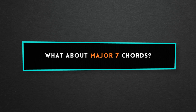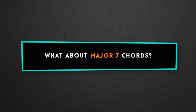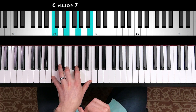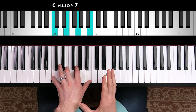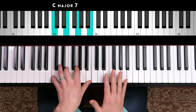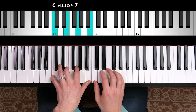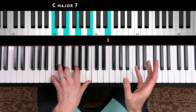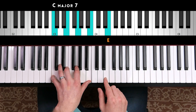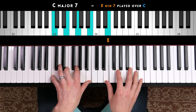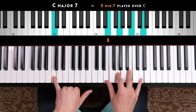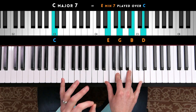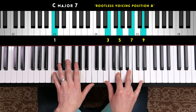Now how about a major 7 chord? Let me demonstrate from C. If we had a C major 7 chord, again we could use a rootless chord voicing. For a major 7 chord, we're going to find the chord's third — a major 3rd this time — which is going to be E. And this time we're going to build a minor 7 chord from E. So E minor 7 is going to look like this. That is our rootless chord voicing Position A for a C major 7 chord.